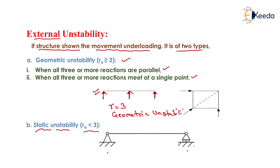In the second diagram, the structure is subjected to three simple supports, so the reaction is equal to three. Checking the first condition: are all three or more reactions parallel? No, they are not. Checking the second condition: do all three or more reactions meet at a single point? Yes, they do — and that is why it is a case of geometric instability.